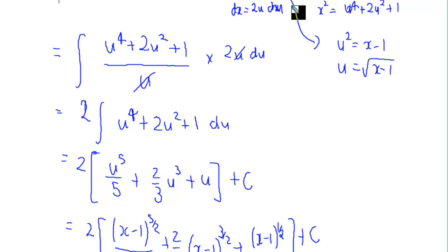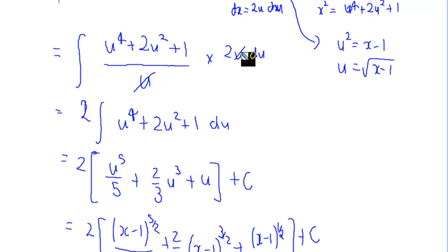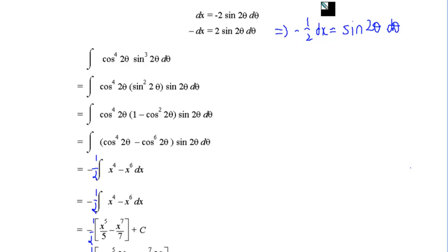In the next one, similarly we've got x is equal to u squared plus 1, so dx is equal to 2u du. u squared can be written as x minus 1, or u as the square root of x minus 1. And x squared would be (u squared plus 1) all squared, which expands to u to the power of 4 plus 2u squared plus 1. We do our substitution for x squared, the square root of x minus 1 which is u, and dx which is 2u du. Do some cancelling, bring the 2 out the front, and then integrate that function before substituting back in for u.